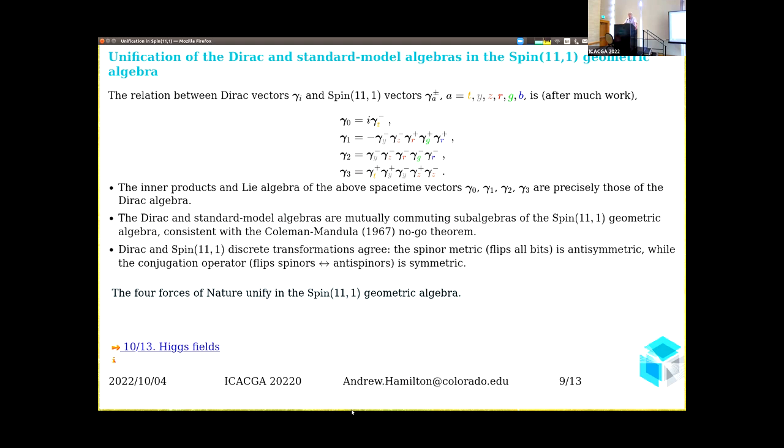If the grand unified algebra is Spin(11,1), then all internal dimensions are space-time dimensions. There's 12 of them, and so the Coleman-Mandula theorem is satisfied trivially. The relation you end up with—these are the four vectors of the Dirac algebra expressed in terms of Spin(11,1) vectors. I've got six bits: T (gold), Y (silver), Z (bronze), and then RGB, the color bits. You find that the inner products and the algebra of these Dirac vectors defined in terms of the Spin(11,1) vectors are precisely those of the Dirac algebra. Moreover, the Dirac algebra and Spin(11,1) geometric algebra automatically satisfy all the discrete symmetries that they must, because Spin(11,1) differs from Spin(3,1) by 8, which is the Bott periodicity theorem.